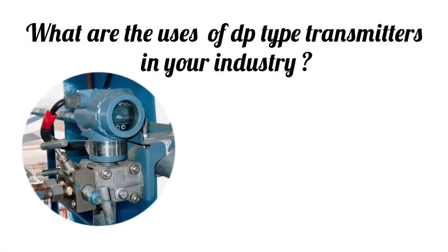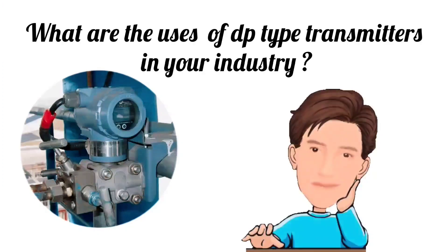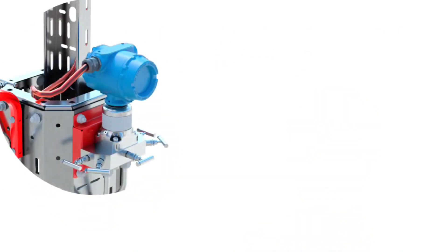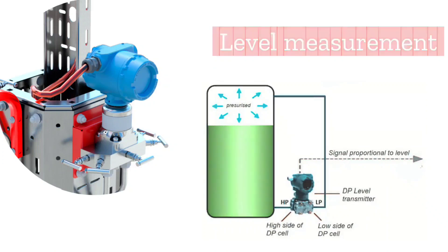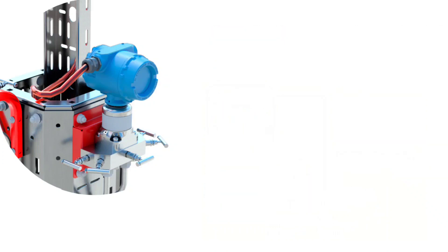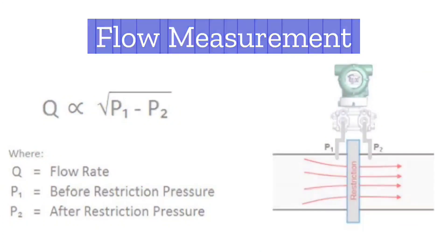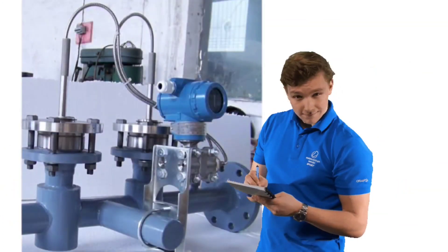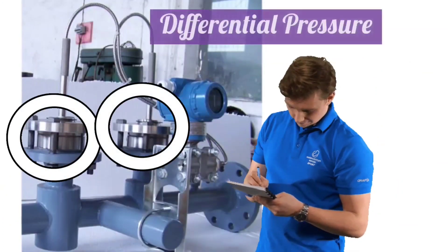Next question: mention the uses of DP type transmitters in your industry. DP type transmitters are used in level measurement. These transmitters are used in flow measurement, and between two points, these transmitters are used to measure differential pressure.